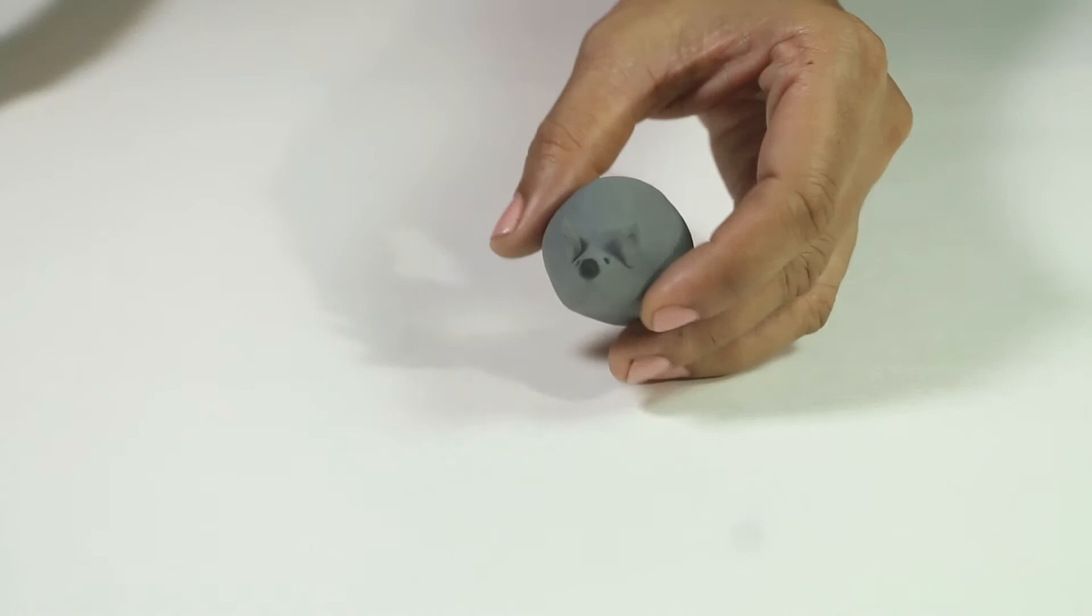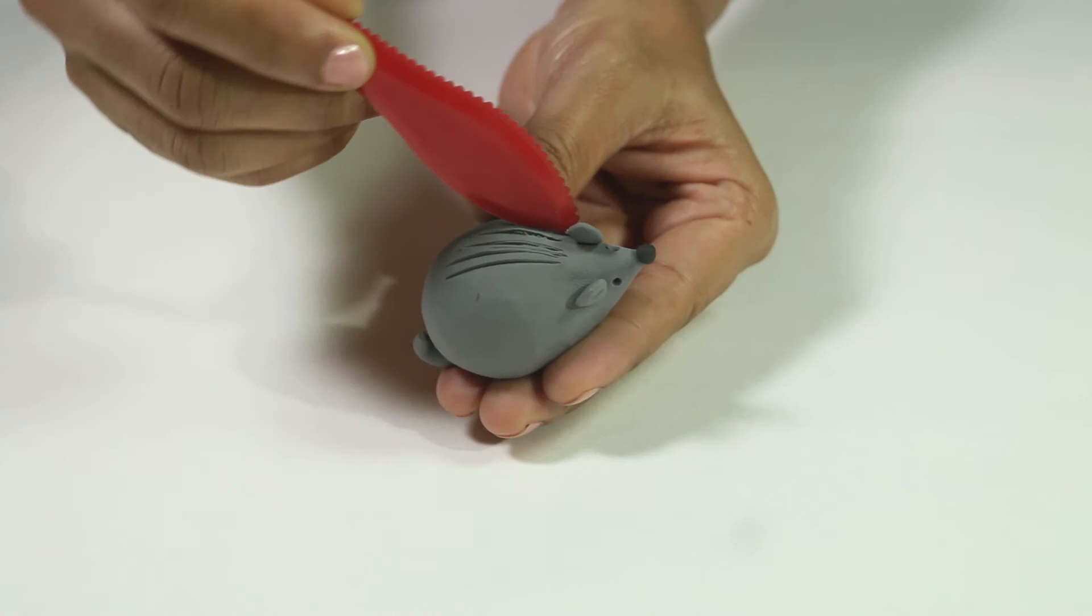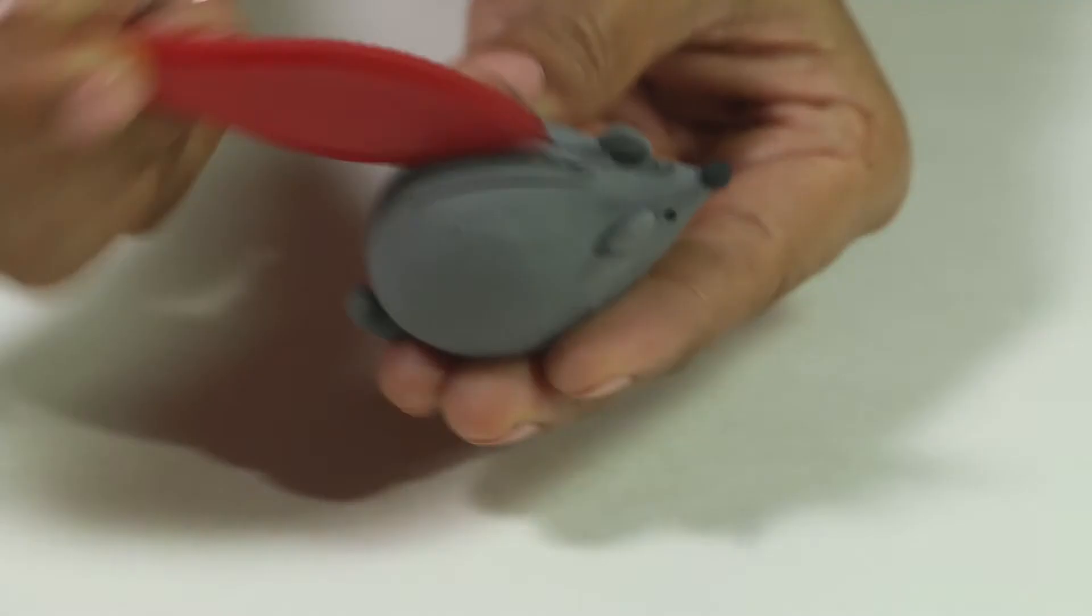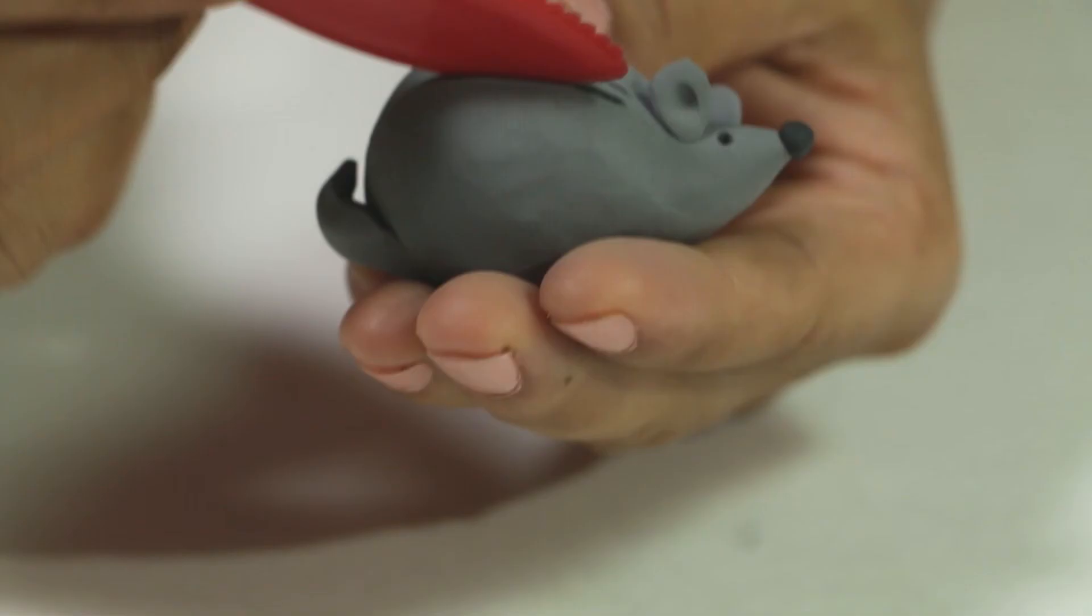Now, we do the spikes and they are simply made using a flat and a little sharp plastic tool. Do remember to clean your tool once in a while if a lot of clay sticks on the surface of the tool.